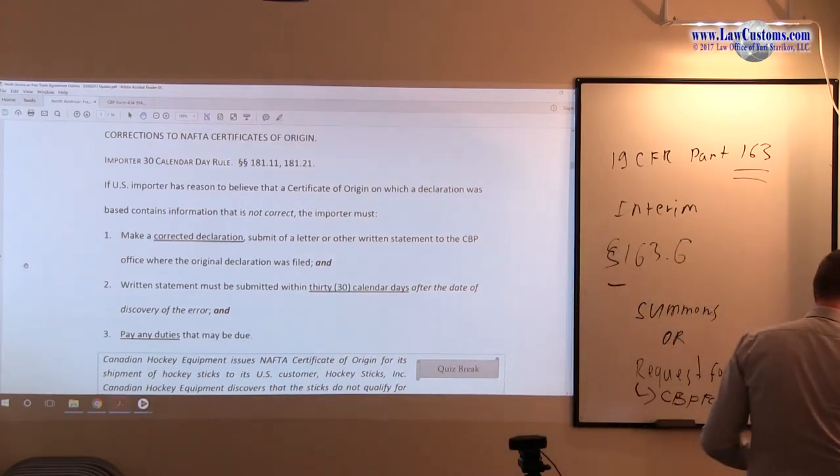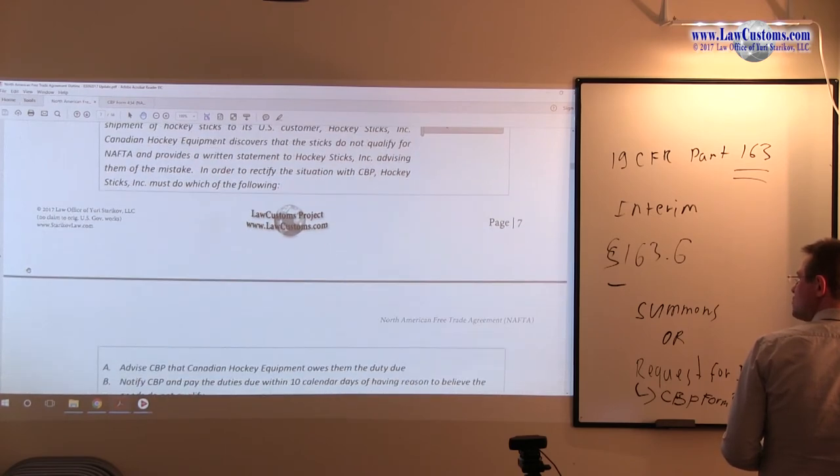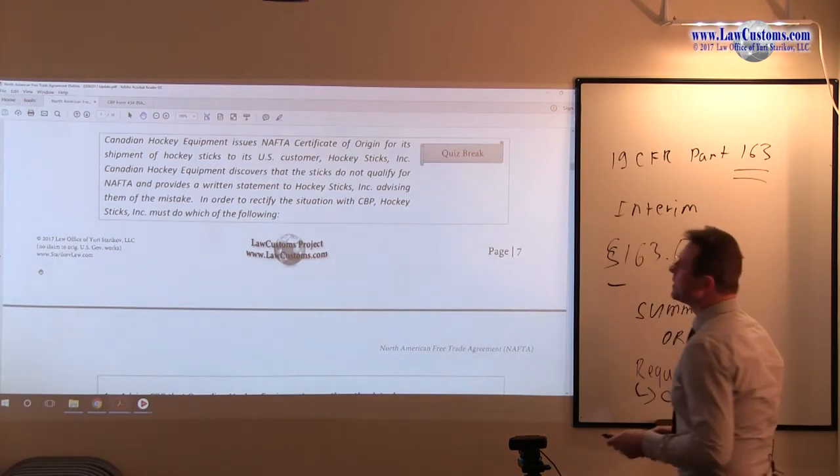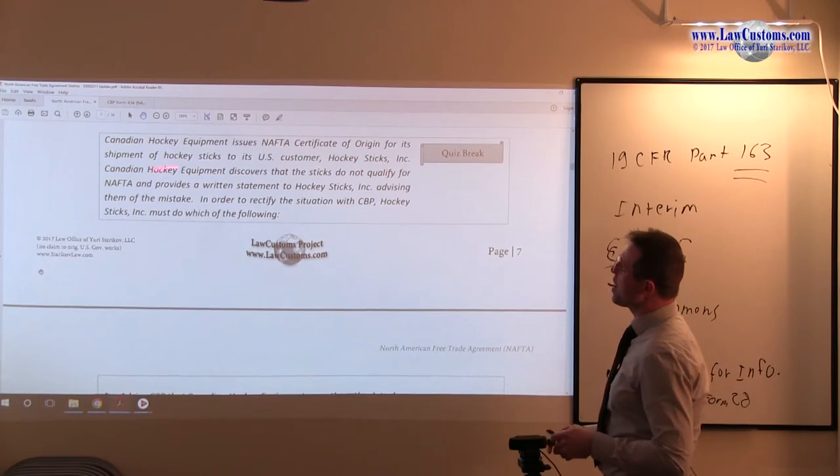Now, let's see how it plays out in the context of the exam. Here we have a fact pattern which says the following: A Canadian hockey equipment issues another certificate of origin of shipment for hockey sticks to U.S. customer, Hockey Sticks Incorporated.